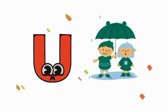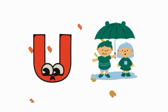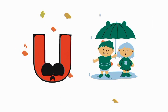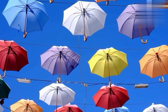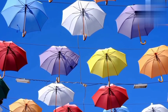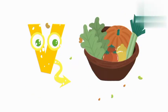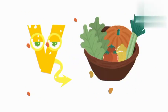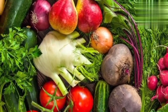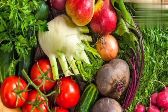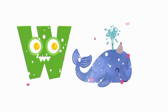U is for umbrella. U U umbrella. V is for vegetables. W is for water.